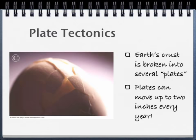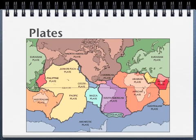Here's a drawing of the plates. Can you find Maine? What plate are we on? The North American plate. Let's find something a little more difficult — how about Kenya? Which plate is Kenya on? Kenya is in Africa, so it's actually on the African plate.